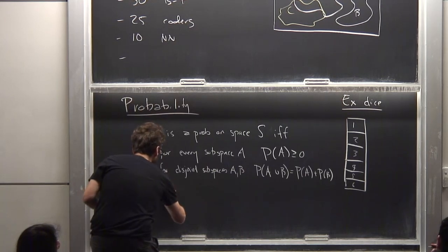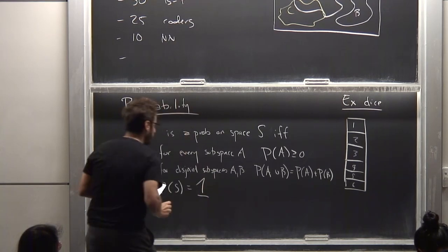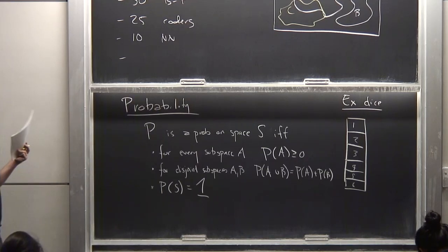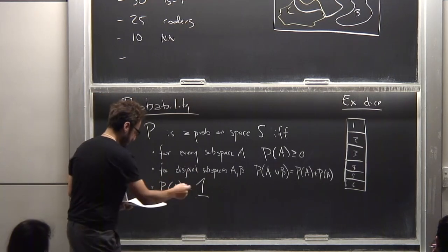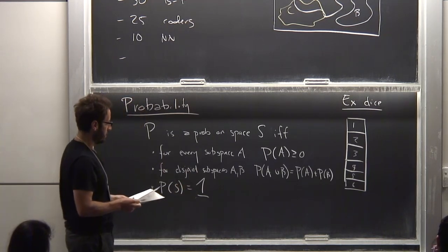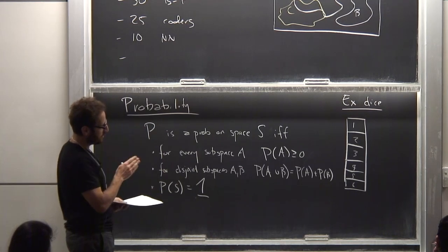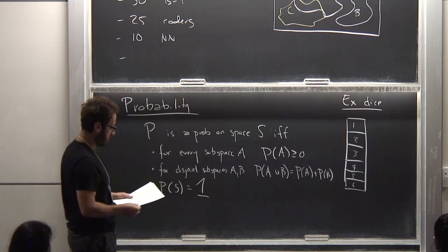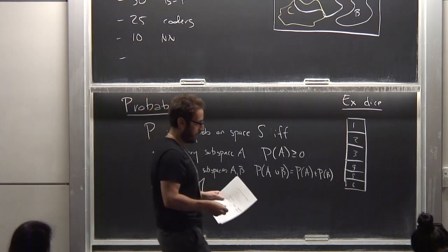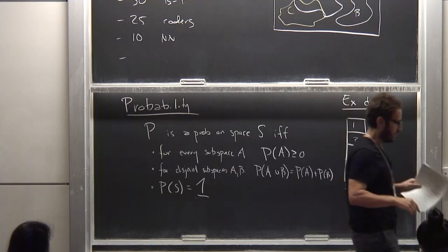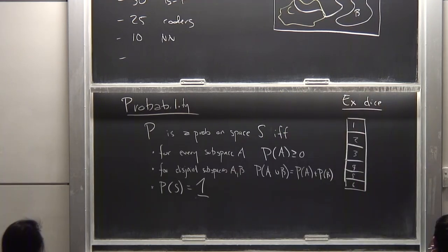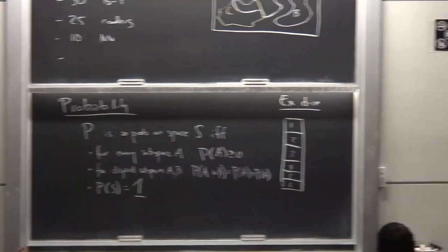The probability of being somewhere in the full space is 1. You roll the dice, something happens — unless the universe is a simulation that gets paused, you're going to get an outcome. Probabilities are between 0 and 1. But this is a simple case — just rolling a die with no preconditions. Sometimes there are more complicated situations where things depend on what happened before.